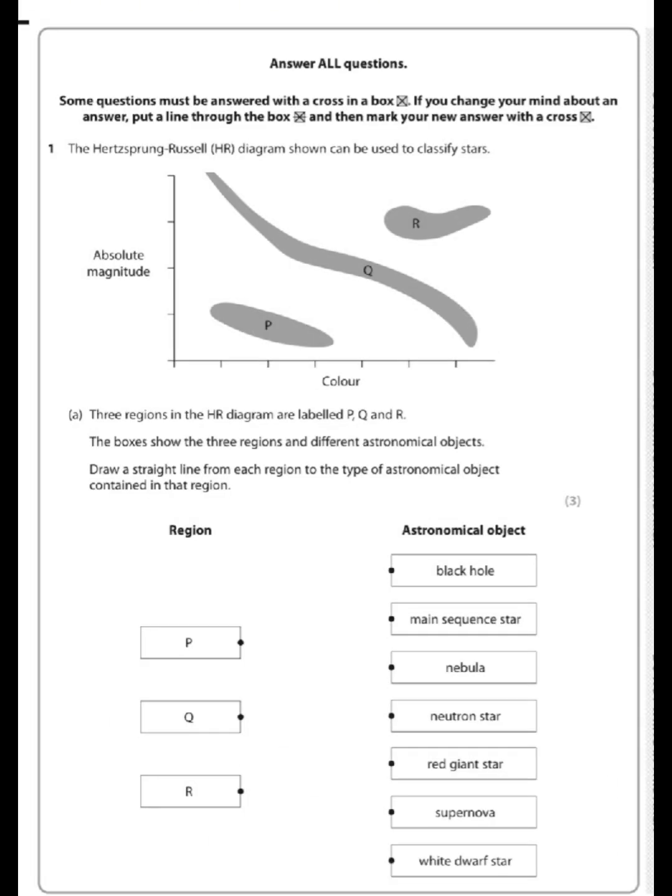Here we've got an HR diagram. An HR diagram has two axes: one of color and one of absolute magnitude. When we think about the color of a star, we're essentially saying how hot is it, and when we think about the absolute magnitude, we think about how bright it is. We've got three regions: P, Q, and R.